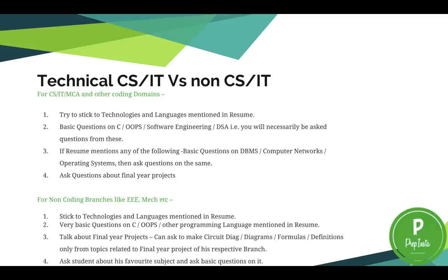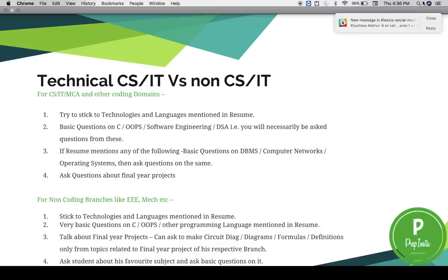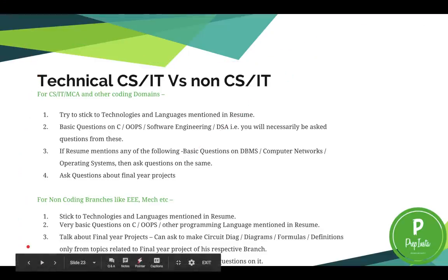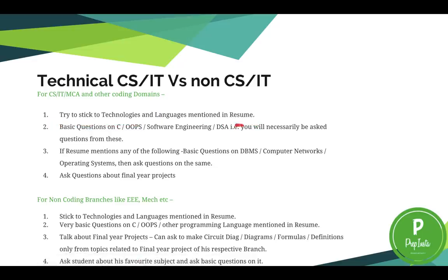For the technical interview, the questions differ between CS/IT and non-CS/IT candidates. For CS/IT students, if you have mentioned any programming language in your resume, they will definitely ask questions from it. They will ask from C, OOPs, software engineering, DSA, DBMS, computer networks, and operating systems. They will also definitely ask about your final year project — including the algorithm, the outcome, and any shortcomings you found.